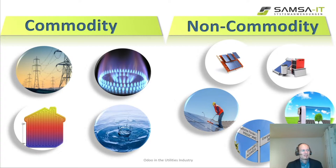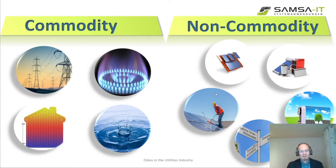The big difference is that commodity products are related to consumption — electricity, gas, heat, water consumption. The more you consume, the more you pay, and your consumption can vary every month. Non-commodity products are just products that you sell and charge for — whether you charge one time, by the hour, or with a fixed price.